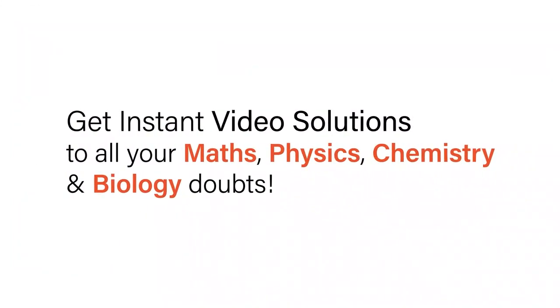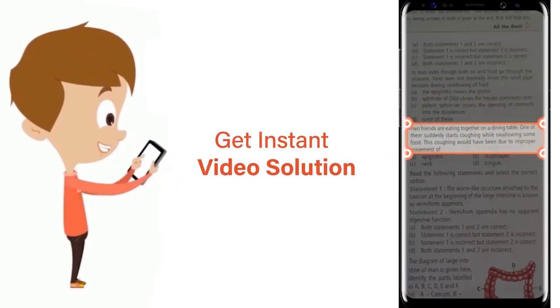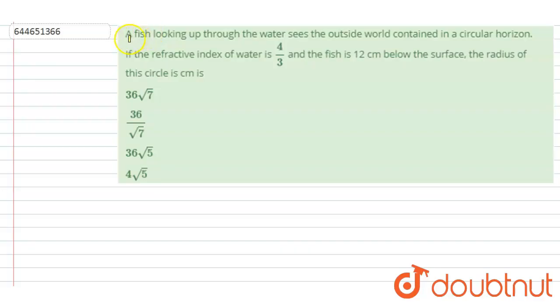With Doubtnut, get instant video solutions to all your maths, physics, chemistry, and biology doubts. Just click the image of the question, crop the question, and get instant video solution. Download. Hello everyone, a fish looking up through water sees the outside world contained in a circular horizon.